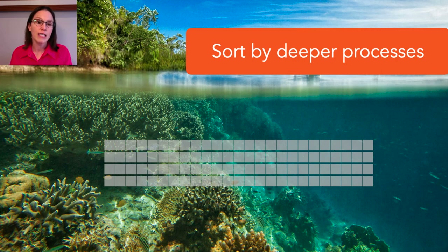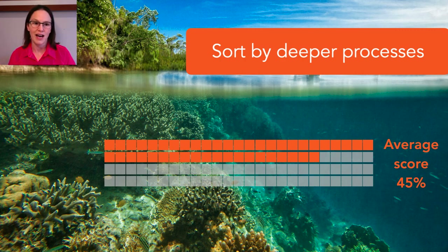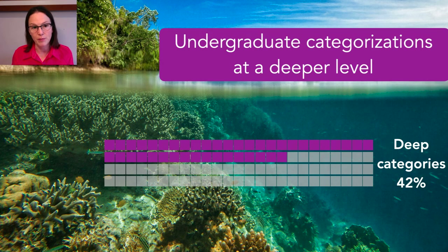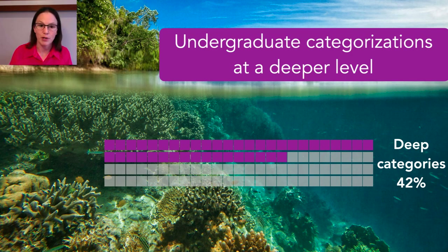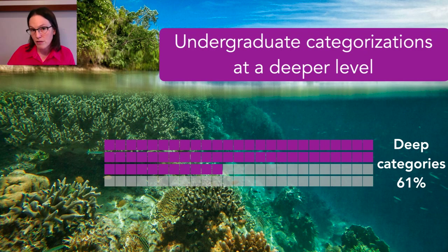On average, what we saw early in a semester was not great — only 23% of the students were able to sort by deeper patterns and processes. These are the second semester organic chemistry students. Things got better later in the semester, with average scores increasing to 45%, still not fantastic but improved. We also looked at what happens to students' choices in categorization when they could sort however they wanted. Early in the semester, 42% of the sorts were done by deeper, process-oriented categories, and later in the semester we're up to 61%. There is certainly change, but we're not quite satisfied yet, so we're trying to understand exactly what helps students categorize and organize their thinking by these deeper levels seen in more advanced graduate students and professors.